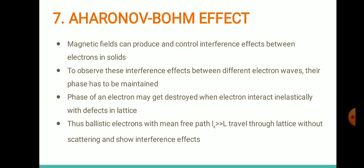Magnetic fields can produce and control interference effects between electrons in solids. To observe these interference effects between electron waves, their phase must be maintained. Any two electron waves must have a constant phase. But if electrons interact inelastically with defects in the system, their phase may get destroyed.